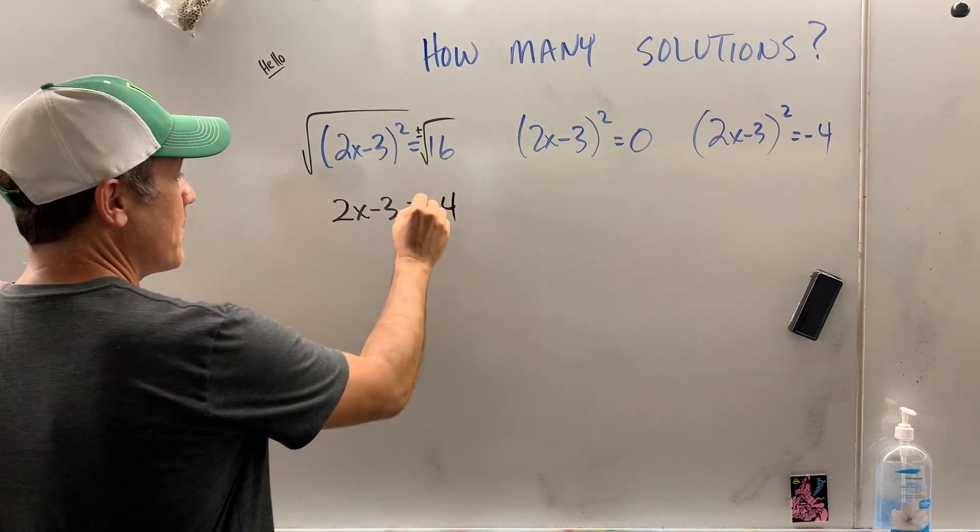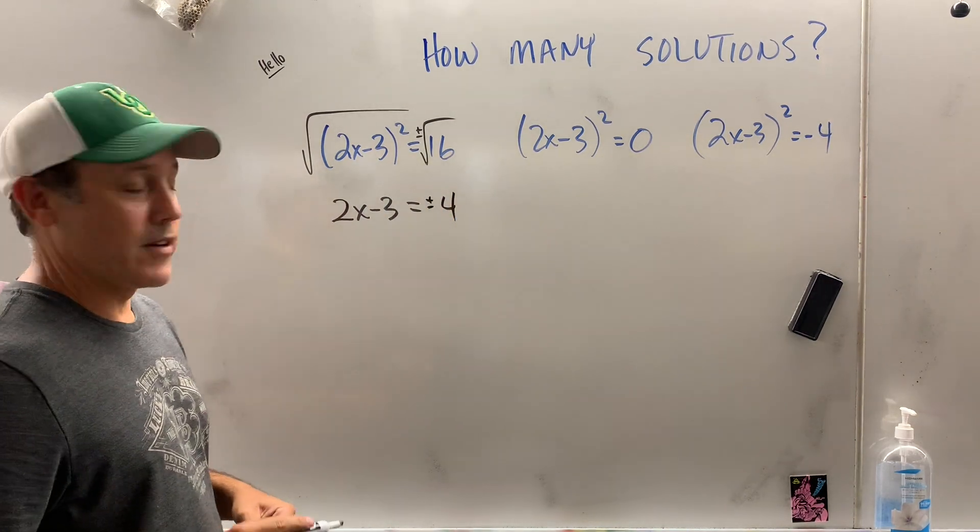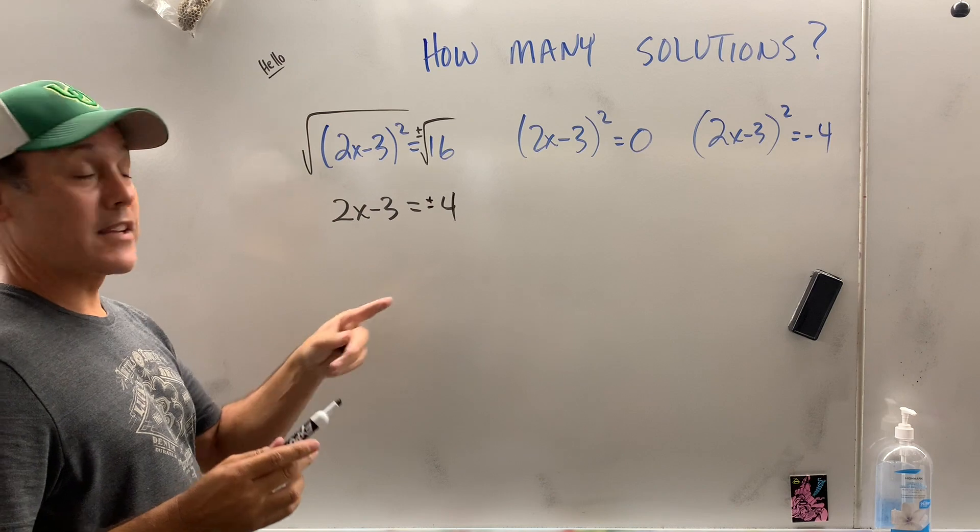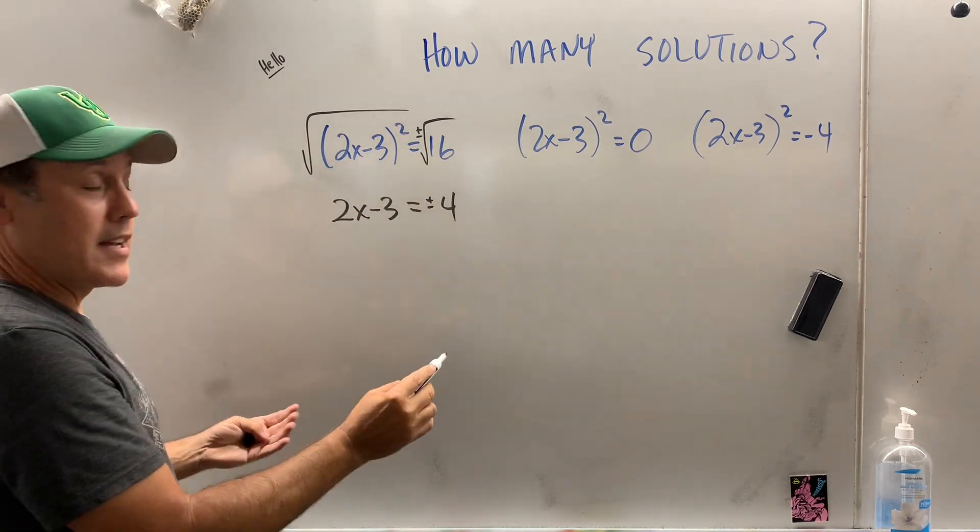See, back in the day, they taught you 4, but it's really plus or minus 4, okay? Because negative 4 times negative 4 will get you to 16. So now we can solve this.